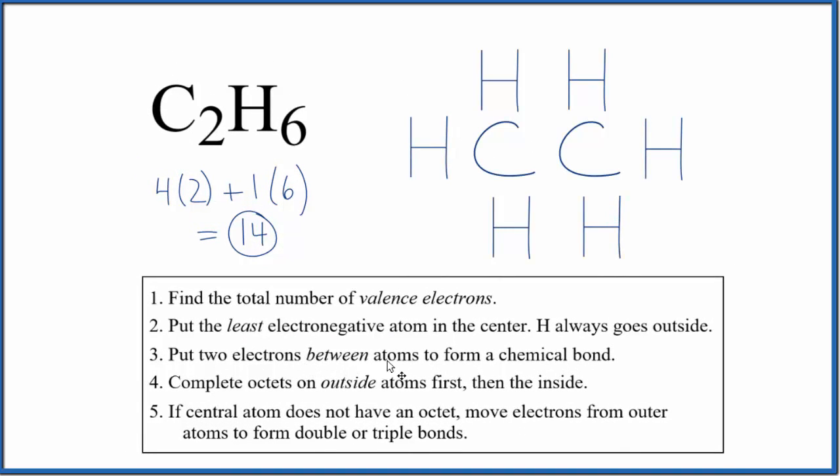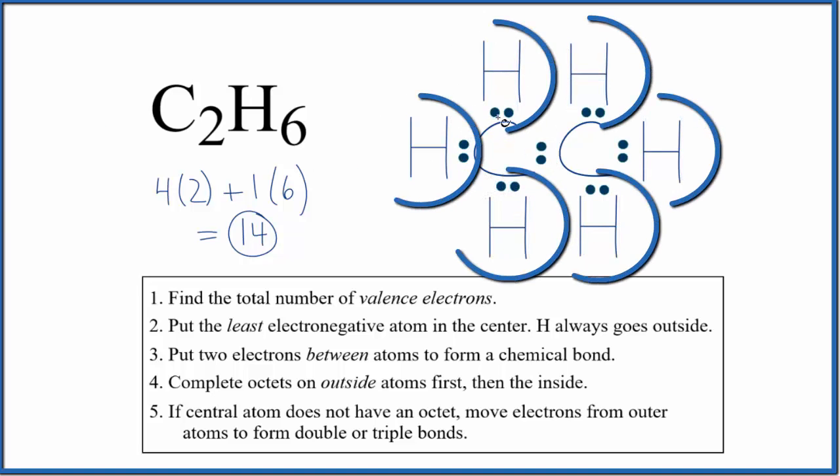Next we'll put a pair of electrons between atoms, and that's going to form the chemical bond. So we'll put a pair of electrons between each carbon and hydrogen here. So at this point, each hydrogen has two valence electrons, so that's good for hydrogen. It only needs two.